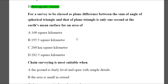Question 7: For a survey to be classified as plane, the difference between the sum of angles of a spherical triangle and that of a plane triangle is only one second at the earth's mean surface for an area of — A: 160 km², B: 195.5 km², C: 260 km², D: 282.5 km². The answer is B — 195.5 km².